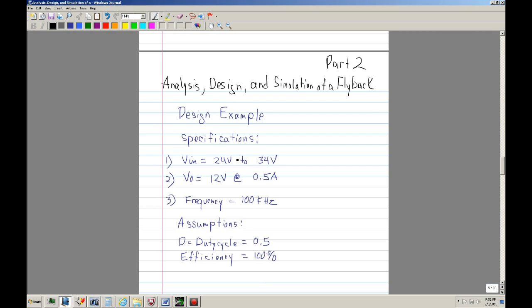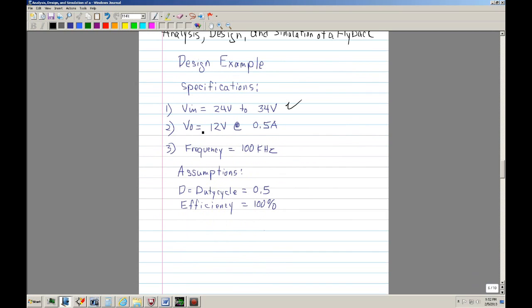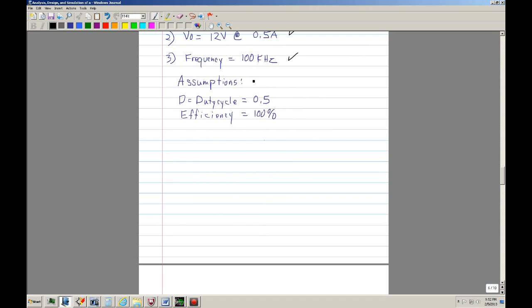Now the last part was the design example. This design example, the power supply we'll be designing and simulating would be from 24 to 34 volts, and we're going to regulate at 12 volts at half an amp, and we're going to have a frequency of 100 kilohertz.